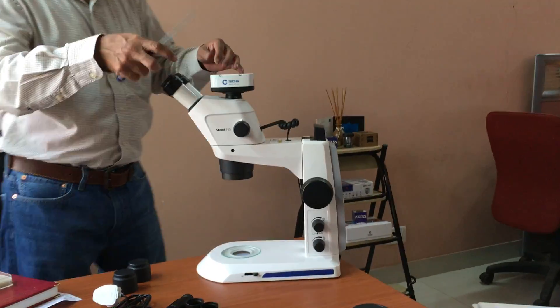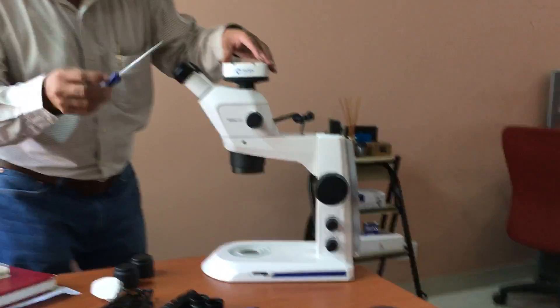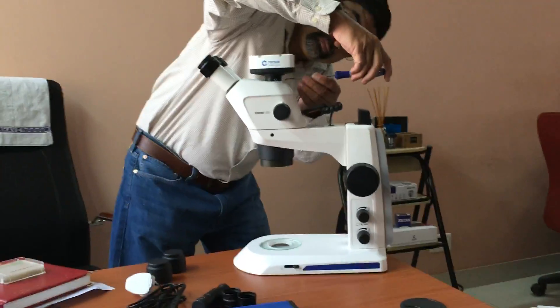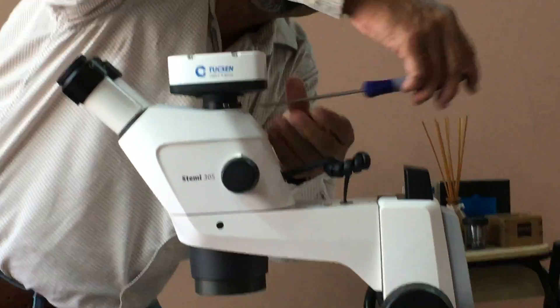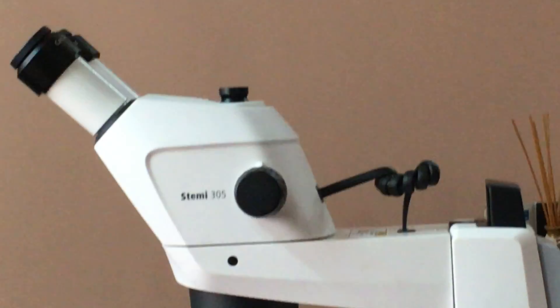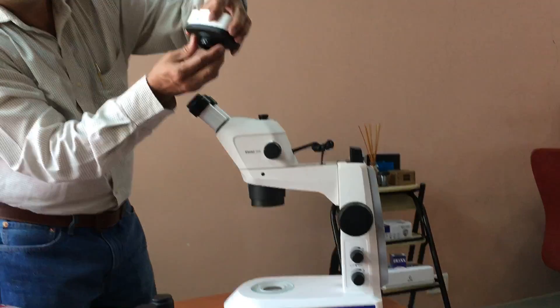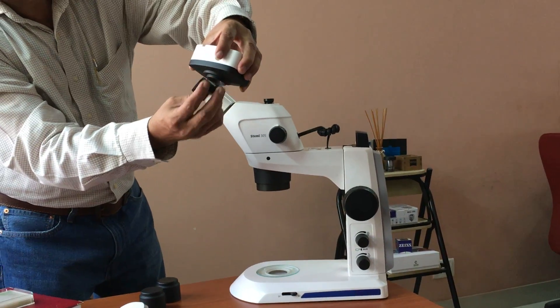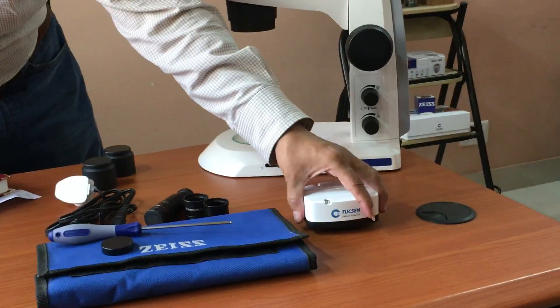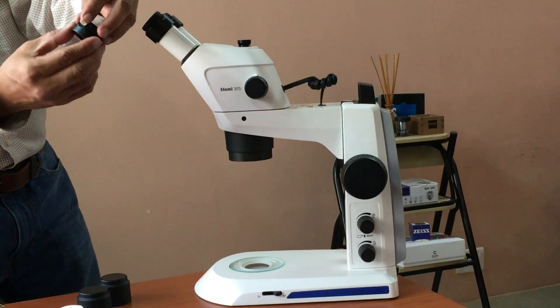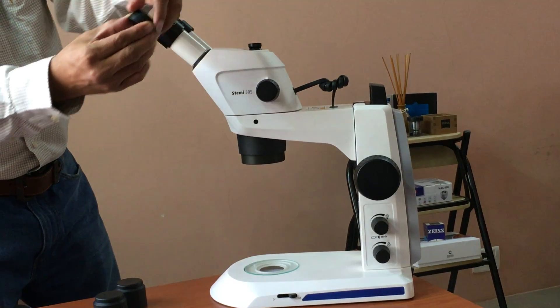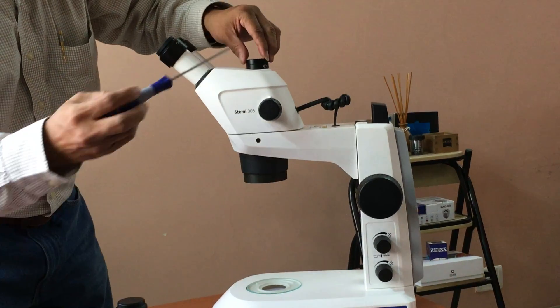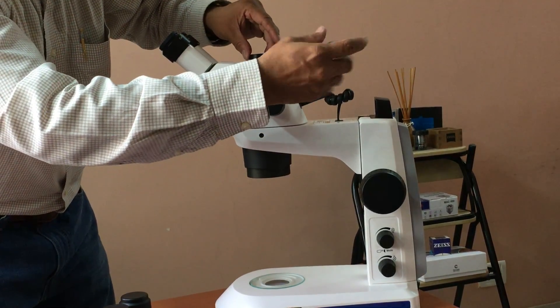We will now demonstrate the connection of the camera onto one of the eyepieces. Removing the camera from the microscope. Loosen the eyepiece. Lift the camera. Loosen the ring. Put the cap. Tighten the allens.